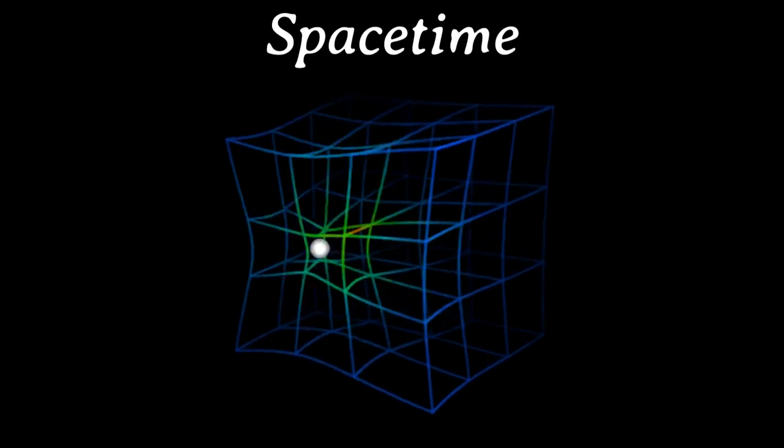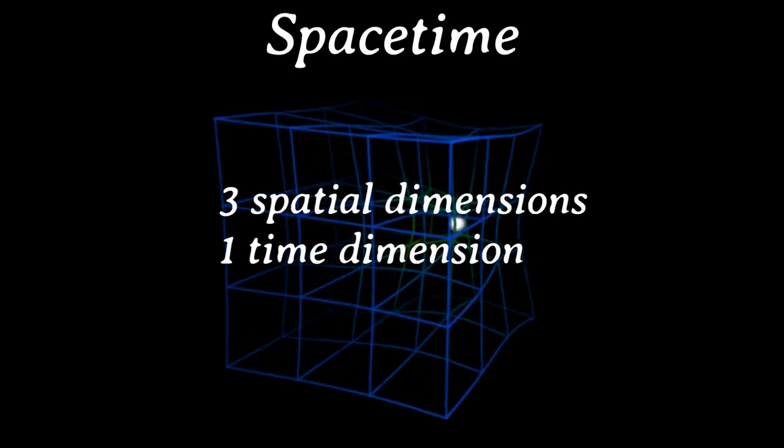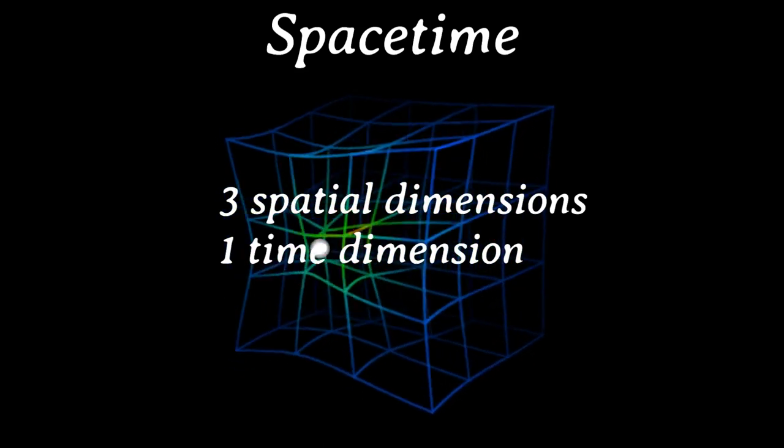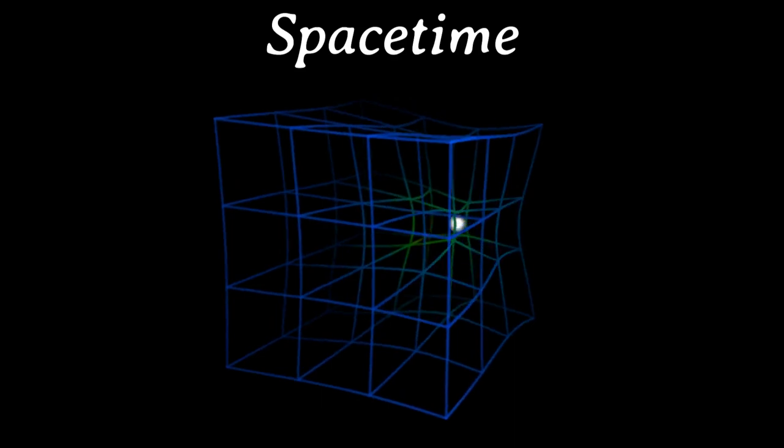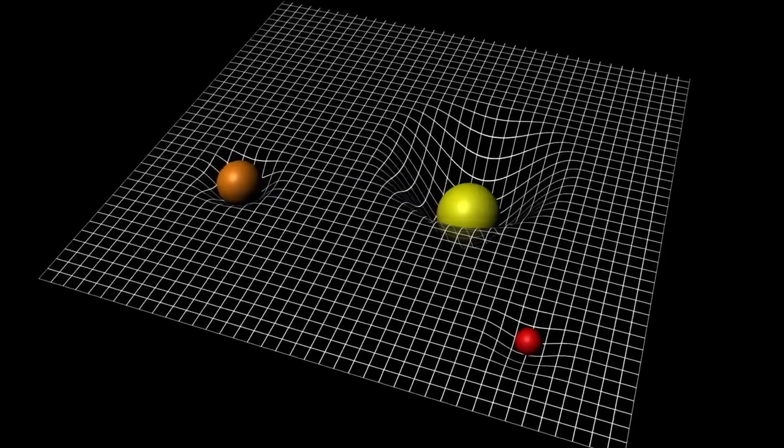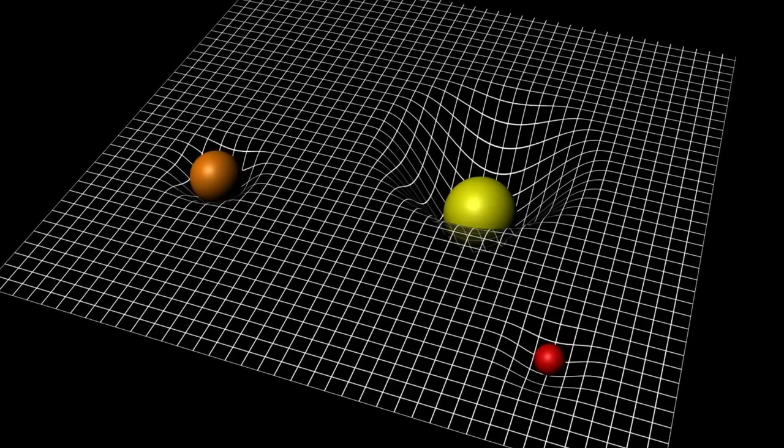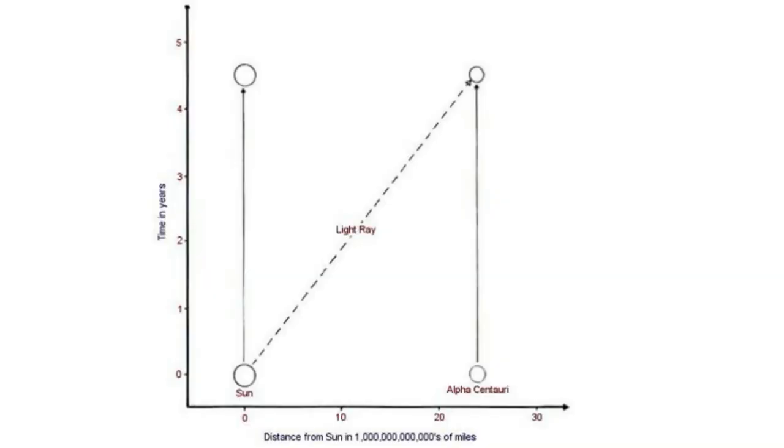The concept of space-time is introduced as a four-dimensional space that combines three spatial dimensions and one time dimension. While it's challenging to visualize four dimensions, it is relatively easy to draw two-dimensional diagrams that represent aspects of space-time. An example of a space-time is given in this diagram. Time is measured upward in years, and the horizontal distance represents the space between the Sun and Alpha Centauri, which is measured in miles. The paths of the Sun and Alpha Centauri in space-time are shown as vertical lines on the left and right of the diagram, and a ray of light from the Sun follows the diagonal line. It takes four years to get from the Sun to Alpha Centauri.